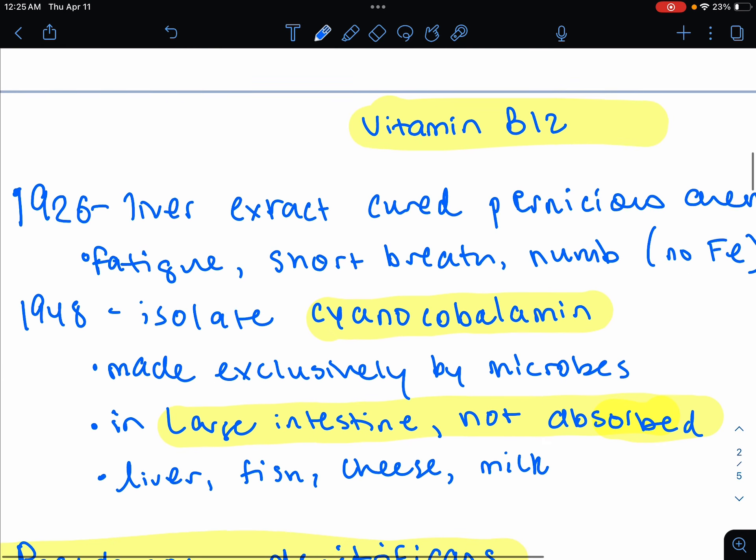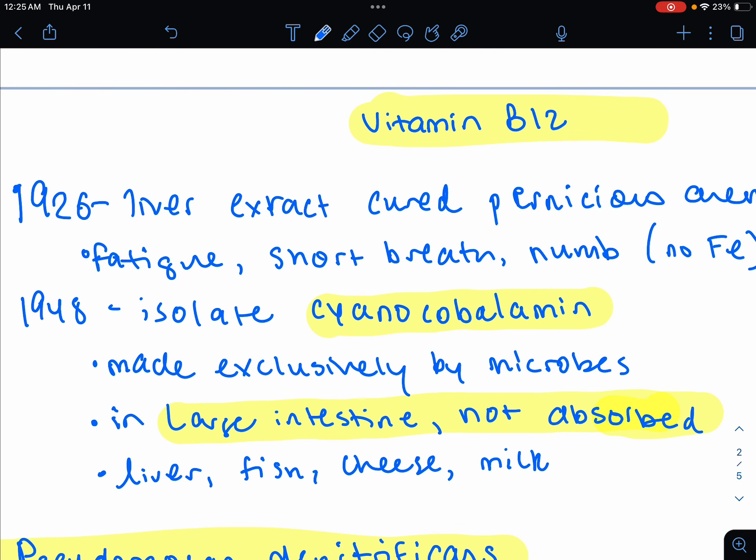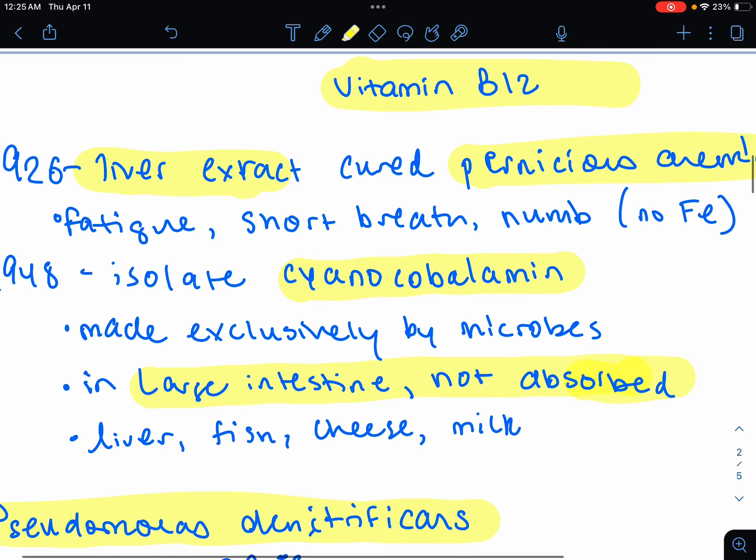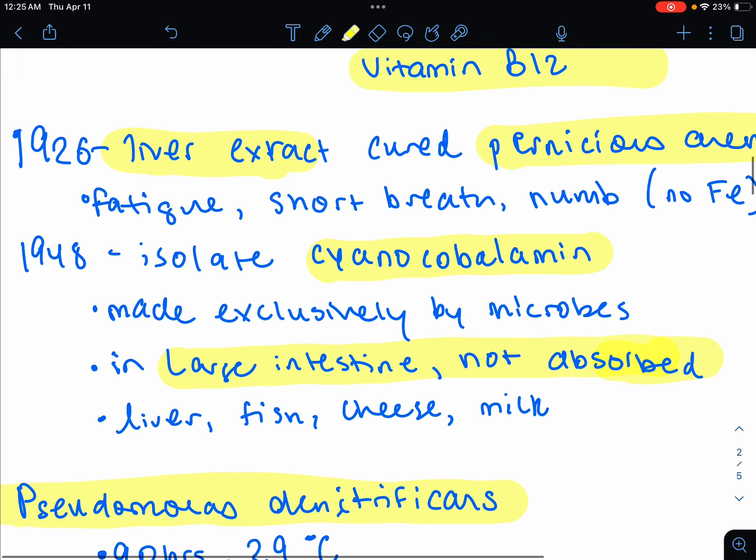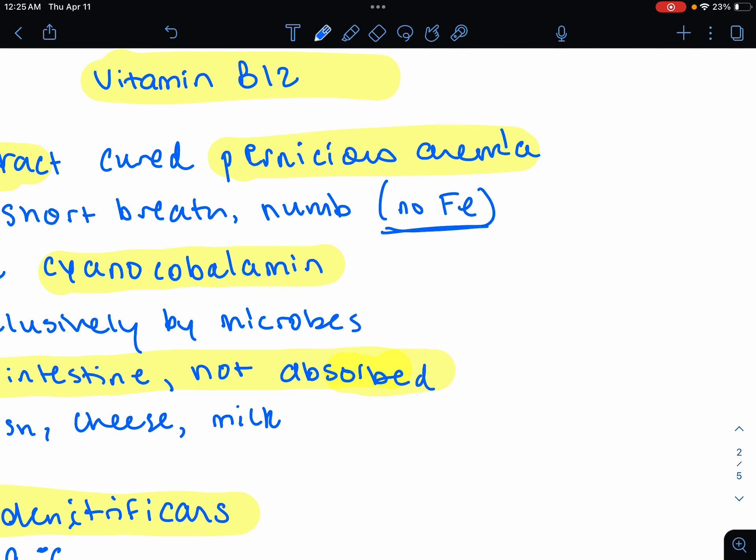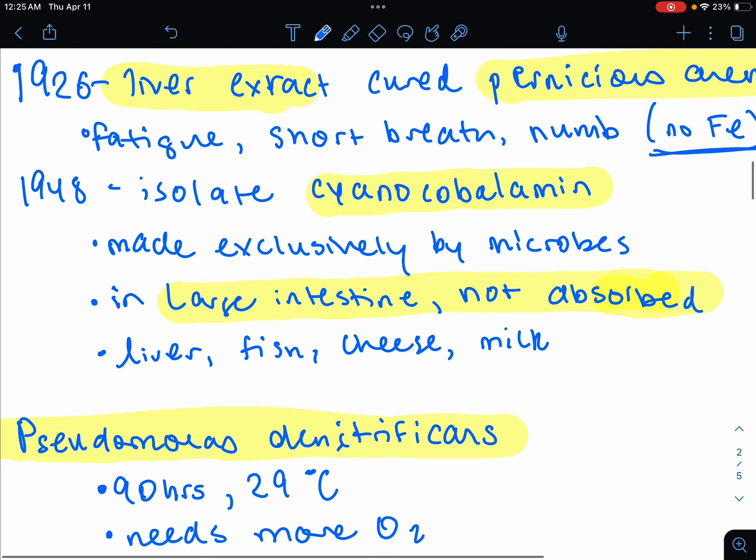Let's look at vitamin B12 next. History in 1926. It showed that liver extract cured the pernicious anemia. Remember, this is the vitamin B12 deficiency. So you have fatigue, shortness of breath, pale skin, numbness in hands and feet. And this is like also showing that you don't have any iron in your system.